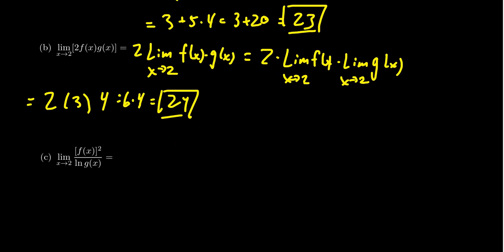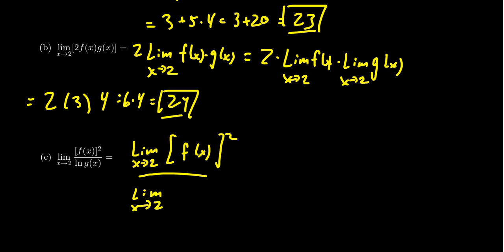What about the limit of f(x)² divided by the natural log of g(x)? Law D tells us this should be the limit as x approaches 2 of f(x)² over the limit as x approaches 2 of the natural log of g(x). We know the limit of f is 3, but what about the limit of f squared? And the limit of g is 4, but what about the natural log of g? This example illustrates that we don't have enough limit properties as they are to handle all the types of functions one might see. So let's add to our limit laws.